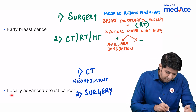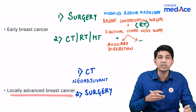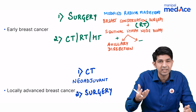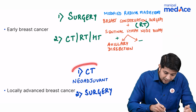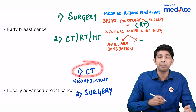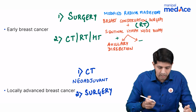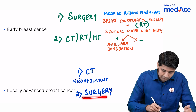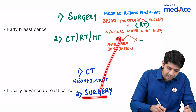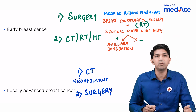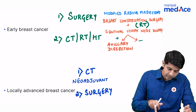Whereas if it's locally advanced breast cancer — that means stage 3 — first you're going to give chemotherapy, and this is called neoadjuvant treatment, followed by surgery. The surgical modality will remain the same.